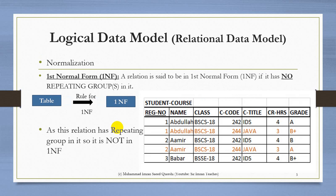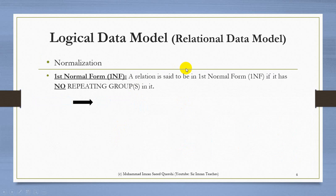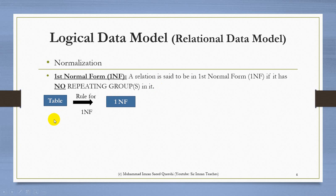Let's start with the First Normal Form. A relation is said to be in First Normal Form if it has no repeating group in it. That means if a table has a repeating group — multi-valued attributes — then it is not in First Normal Form. We take a table, check for repeating groups, remove them, and then the table will be in First Normal Form (1NF).